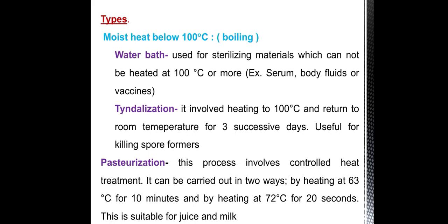Types of moist heat below 100 degree Celsius. Water bath: used for sterilizing materials which cannot be heated at 100 degree Celsius. Tyndallization: involves heating to 100 degree Celsius and returning to room temperature for 3 successive days, useful for killing spore formers. Pasteurization: this process involves controlled heat treatment, carried out by heating at 63 degree Celsius for 30 minutes or by heating at 72 degree Celsius for 20 seconds. This is suitable for juice and milk.